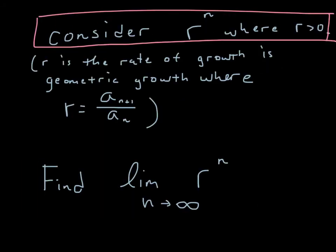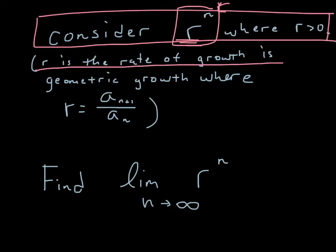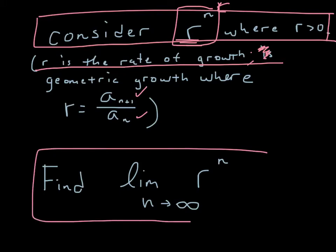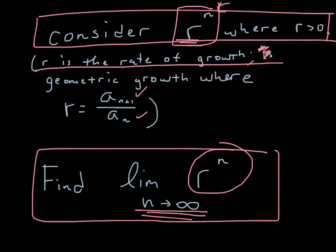Now let's put this in the context of geometric growth. In geometric growth, we have some growth rate r raised to the number of terms n. We want to think about what happens when n gets really, really big — when we add an infinite number of terms. Here r is the rate of growth, defined as the (n+1)th term over the nth term. What happens to this value when n approaches infinity?